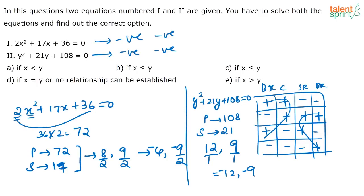Very clearly, what can we see is that these two roots are definitely greater than these two at any point of time. So I can say that x is greater than y. That is option E.